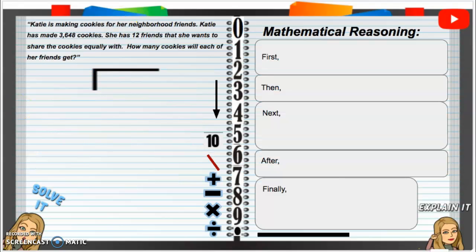Katie is making cookies for her neighborhood friends. Katie has made 3,648 cookies. She has 12 friends that she wants to share the cookies equally with. How many cookies will each of her friends get?